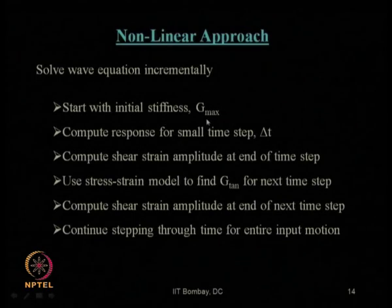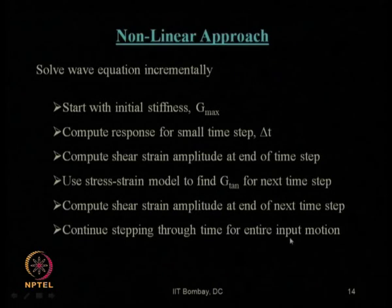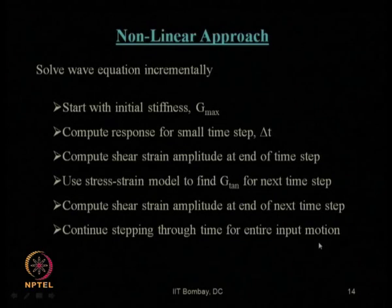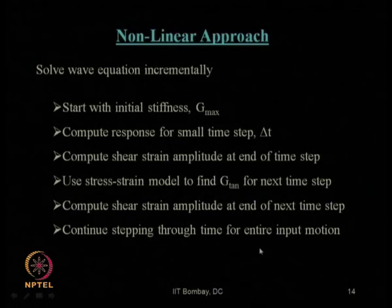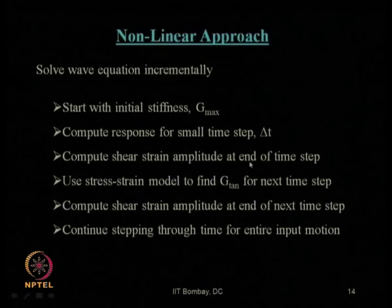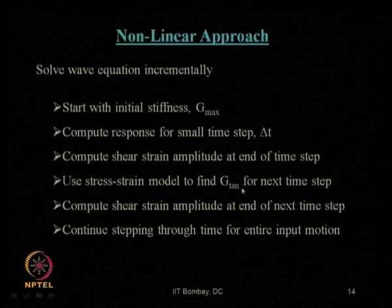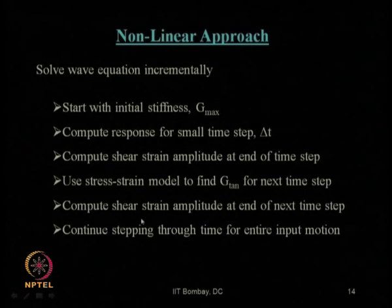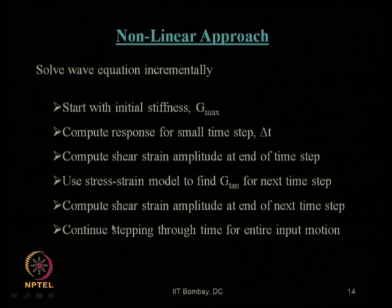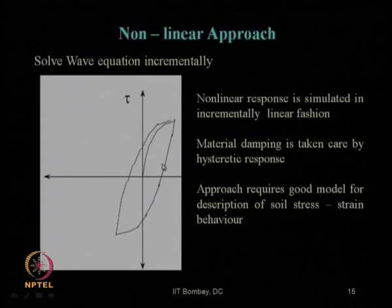We start with the initial tangent modulus, which is G_max, then use a small time step delta-t chosen based on the entire time duration of the input ground motion, subdivided into a number of small time segments. We compute the shear strain amplitude at each end of the time step, which gives the corresponding tangent modulus G_tangent for each time step, leading to the shear strain amplitude at the end of each time step for the entire time duration. By this incremental procedure, we get the backbone curve of non-linear response, which automatically considers material damping through the hysteretic response.